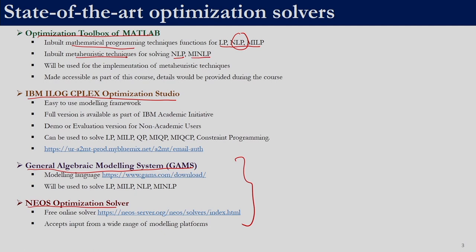We will also be using MATLAB for implementing the meta-heuristic techniques that we discuss. IBM iLOG CPLEX Optimization Studio — the full version is available as part of IBM academic initiative; non-academic users can use either the demo or evaluation version. IBM iLOG CPLEX Optimization Studio can be used for solving linear programming, mixed integer linear programming, quadratic programming, mixed integer quadratic programming, mixed integer quadratic constraint programming, as well as constraint programming.